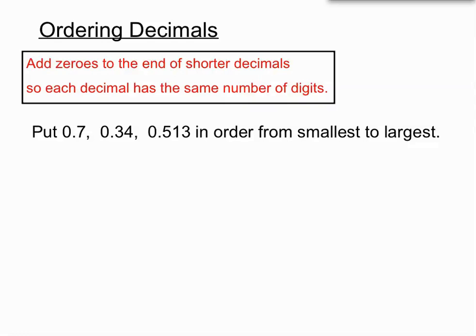Let's have a look at an example. We are asked to put 0.7, 0.34, 0.513 in order going from smallest to largest. So first of all we are going to put 0.7 down, 0.34 and 0.513 all in a column.